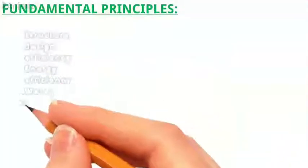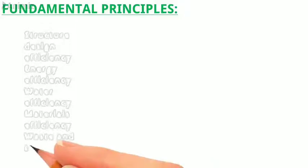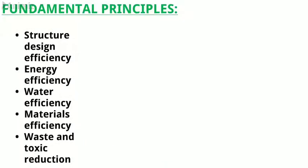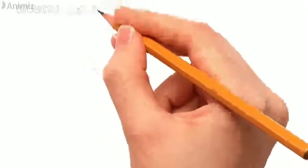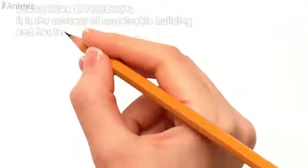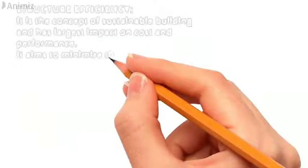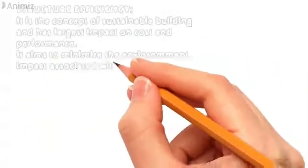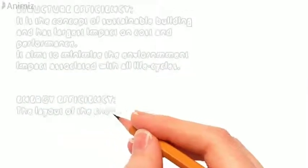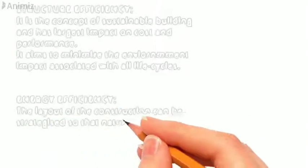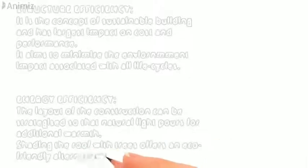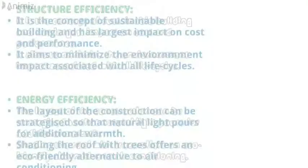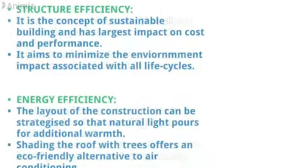Structure design efficiency, energy efficiency, water efficiency, materials efficiency, waste and toxic reduction. Structure efficiency is the concept of sustainable building and has largest impact on cost and performance. It aims to minimize the environment impact associated with all life cycles. Energy efficiency: the layout of the construction can be strategized so that natural light pours for additional warmth. Shading the roof with trees offers an eco-friendly alternative to air conditioning.